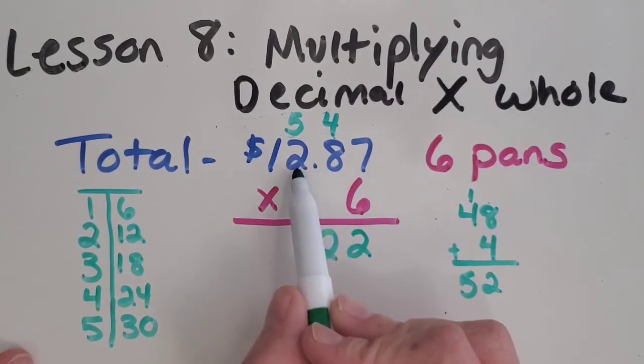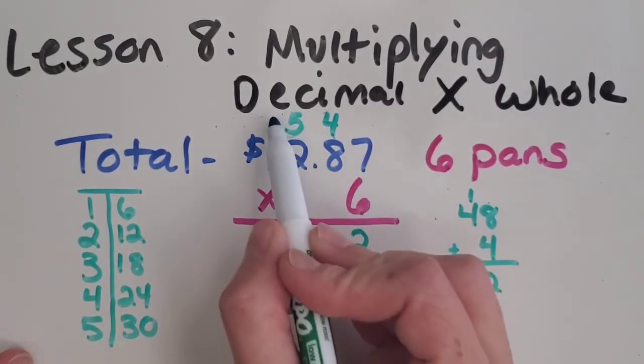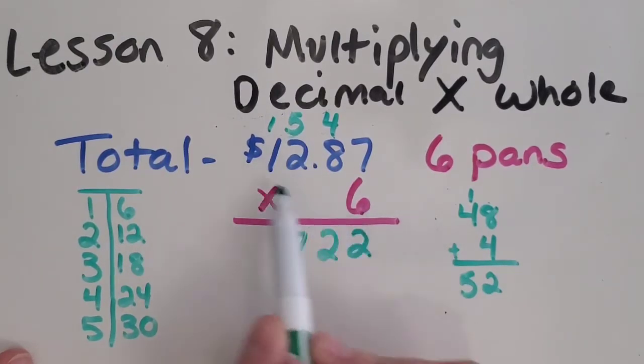Six times two is 12, plus the five is 17. Just almost done. One times six is six, plus the one is seven. Now the only thing we have left is to figure out the decimal point.